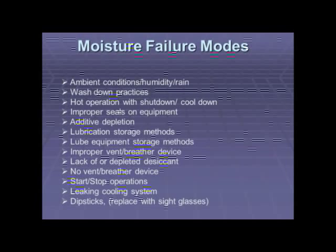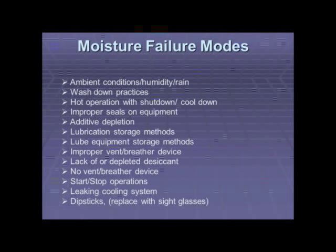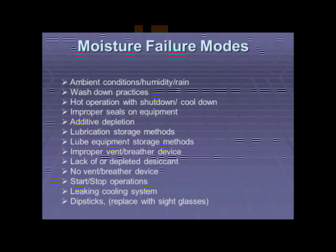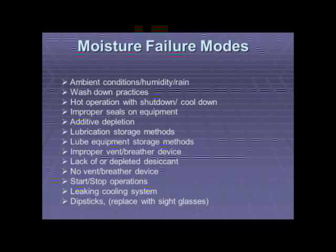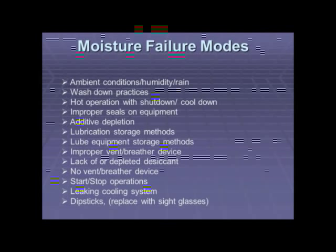Now moisture failure modes. I've tested new oils in plants and found delivered drums that had up to 1% moisture. New oils in drums should be less than one-tenth of 1%. In equipment, moisture comes from: ambient conditions and humidity — I did a lot of work in Texas and Louisiana where high humidity caused moisture to get into new drums and operating equipment. Equipment outside in rain may have these failures. Wash-down practices at food plants cause a lot of moisture to get into gearboxes. Equipment that runs hot and then shuts down will pull in outside ambient moisture as it cools.